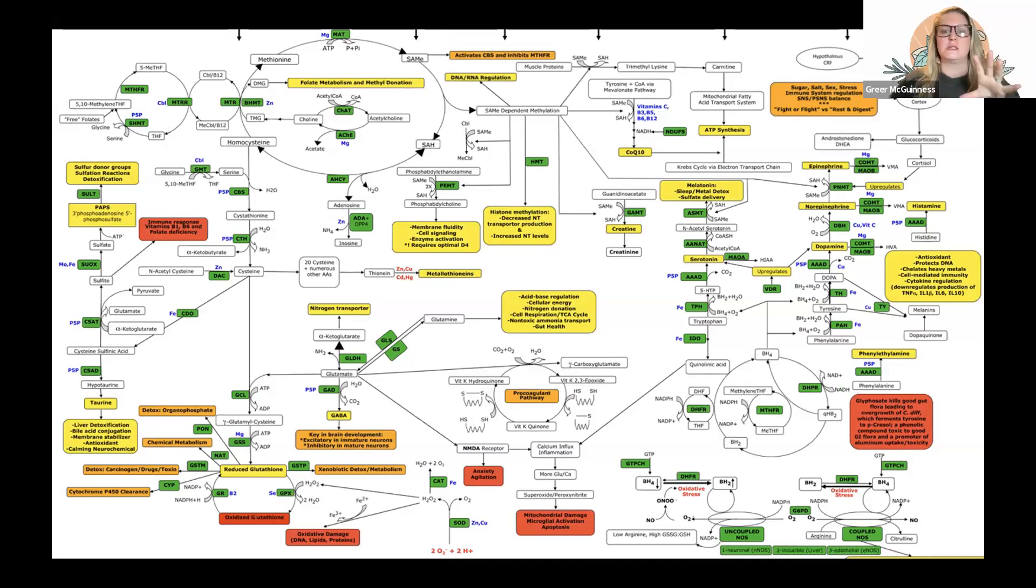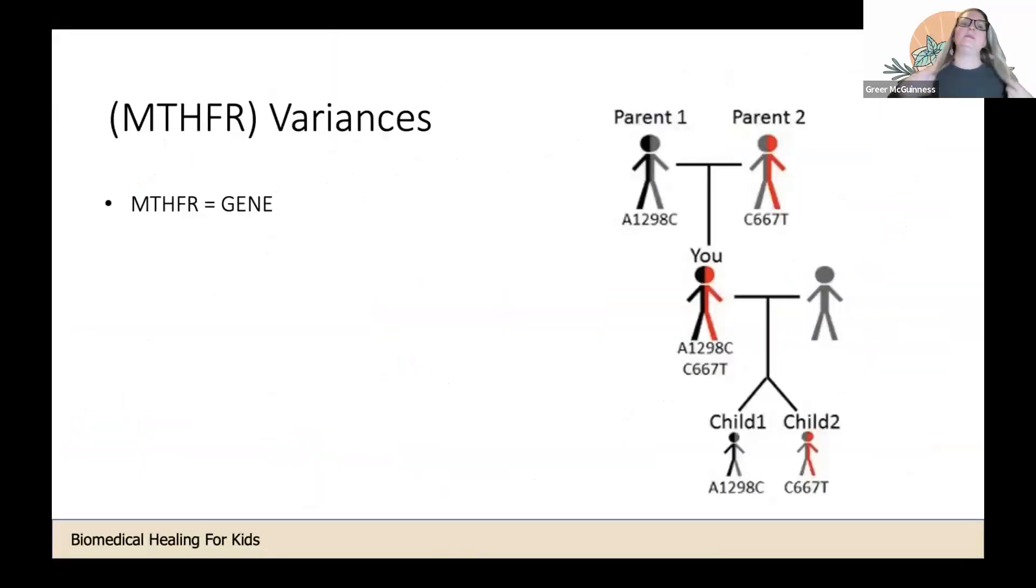With MTHFR we have variances, and this is what's really important to understand and note. People come to me and say, 'Hey, I have the MTHFR gene, what do I do?' And I say, 'Well, what variance do you have?' And they say, 'I don't know, I just was told I have MTHFR.' We need to understand and break it down a little bit further.